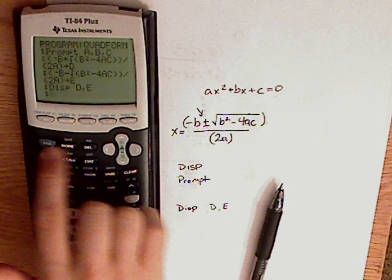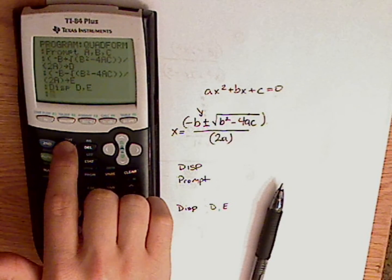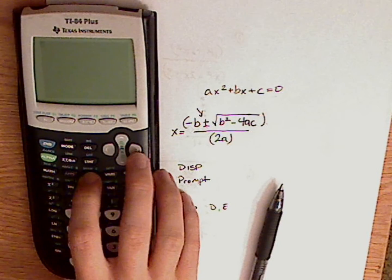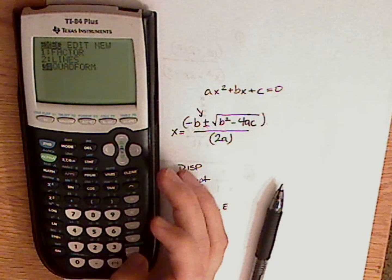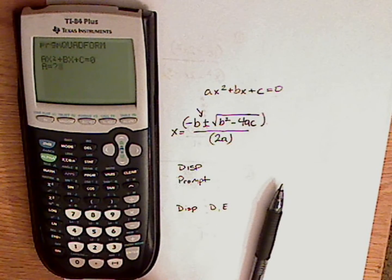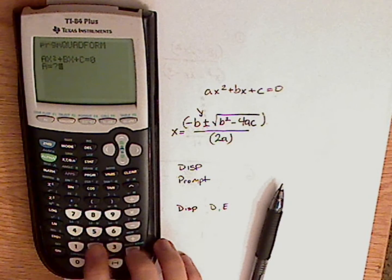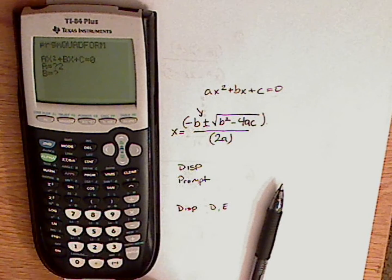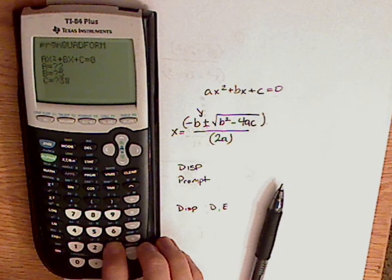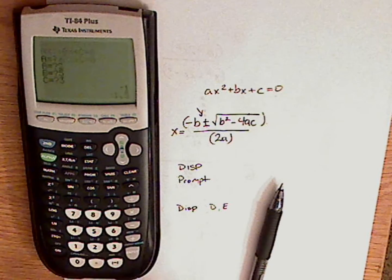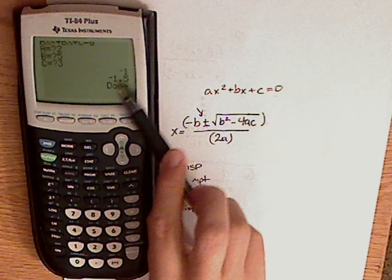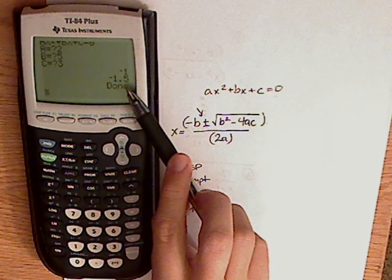Okay, I just typed in my program, so let me use it. So push program, go to execute, quad formula, and then push enter. Okay, have my 2, let's say 5 is my B, and then for my C, that's 3. So my solutions are negative 1 and negative 1.5.